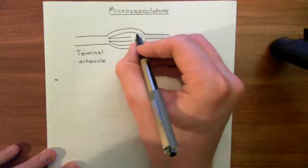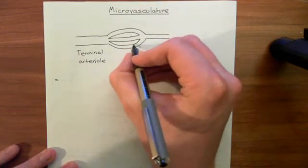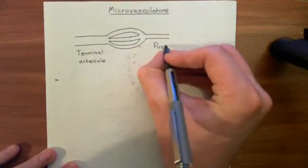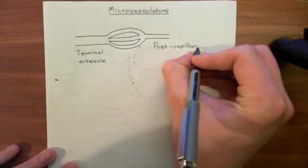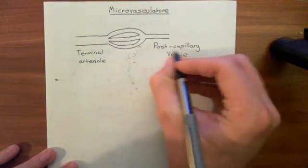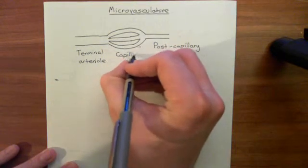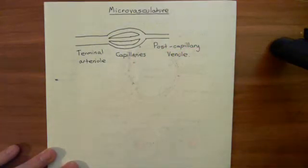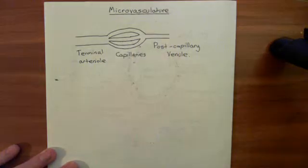The capillaries reconverge to make a small blood vessel known as a venule. Again, the term venule covers a very broad scope of different sized blood vessels. To emphasize you mean the venule just after capillaries have reconverged, you can use the term post-capillary venule. So we have a terminal arteriole splitting into capillaries, and the capillaries then reconverge to form a post-capillary venule.